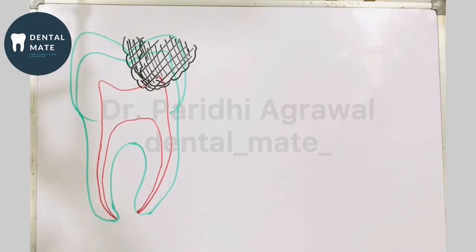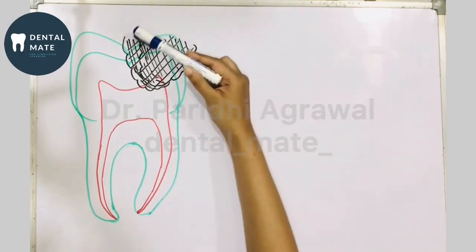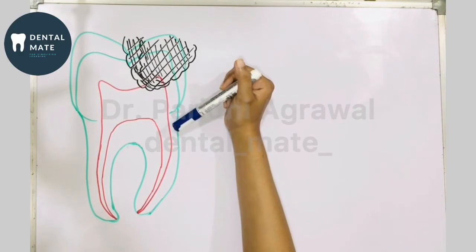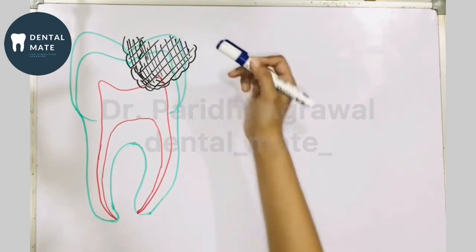Hello everyone, welcome back to my YouTube channel. This is Dr. Paridi, your dental mate, sharing simplified versions of dental learning. Today in this video we'll be talking about a guide to access cavity preparation. We have seen earlier that access cavity preparation is the first step for root canal treatment. Looking at this radiograph, we can see dentinal caries approaching the pulp, which is the vital tissue, so this tooth requires root canal treatment.